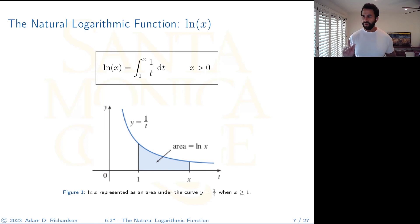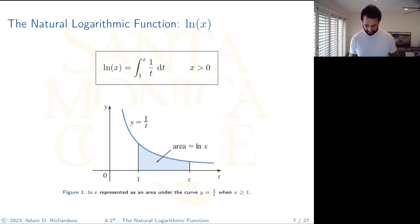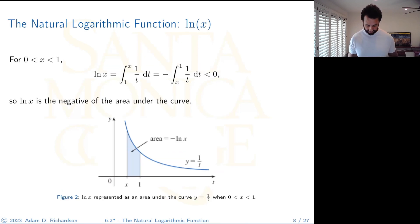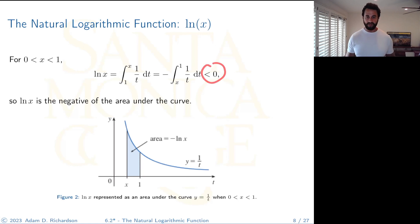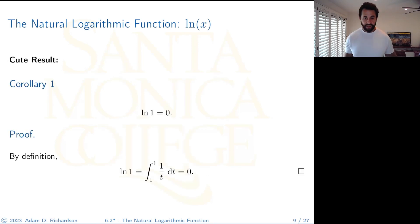The integral is defined for all x greater than zero, but the picture shown is for x greater than 1. When x is between 0 and 1, we're still integrating under the curve, but x comes before 1. Switching the order of the bounds changes the sign of the integral, which agrees with what we know from pre-calculus: when x is between 0 and 1, the natural log is negative.